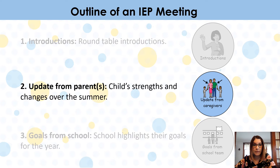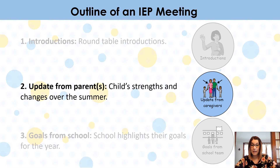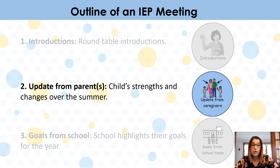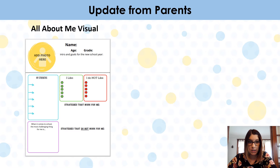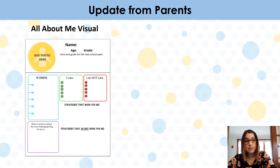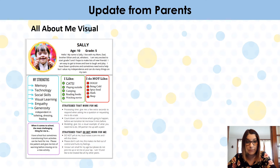The second part of an IEP or IIP meeting is usually an update from parents or caregivers. Sometimes this takes parents back a little because they weren't prepared for it, but it's really just an informal way for parents to share what's been happening over the summer, or some of your child's strengths or challenges. AIM has an 'all about me' visual that you are welcome to fill out and bring to the meeting, covering things like your child's strengths, things they like, and things they don't like. Or you can just informally share some things about your child.